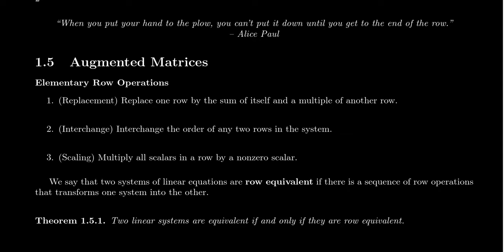The second row operation we call interchange. You're going to interchange the order of any two rows. So if you have the first row and the second row, you can swap them. The second row becomes first and the first becomes second. If you want the first to be last and the last to be first, you can do that. Switching the rows is allowed.